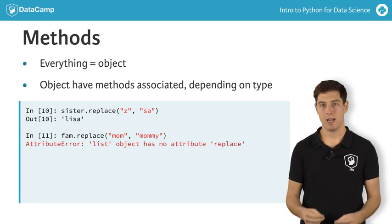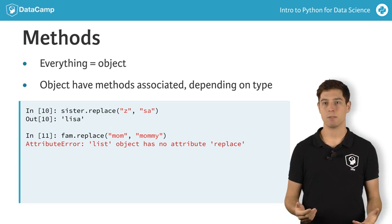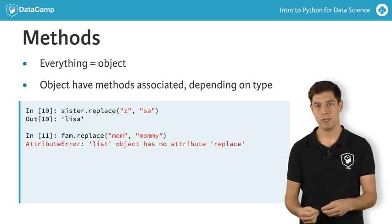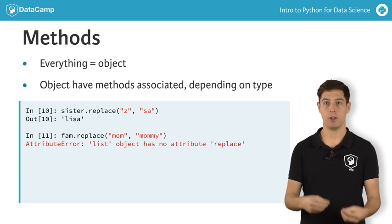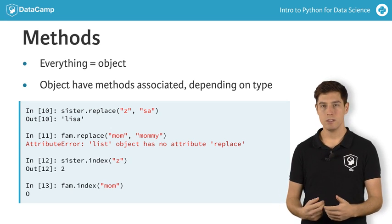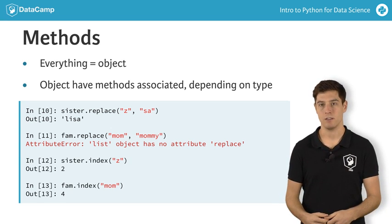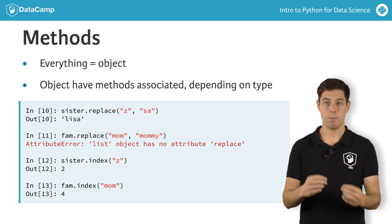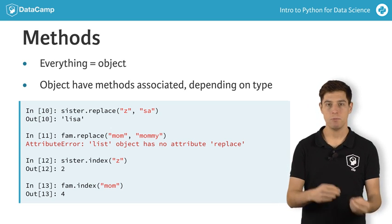Objects of different types can have methods with the same name. Take the index method. It's available for both strings and lists. If you call it on a string, you get the index of the letters in a string. If you call it on a list, you get the index of the elements in the list. This means that, depending on the type of the object, the methods behave differently.